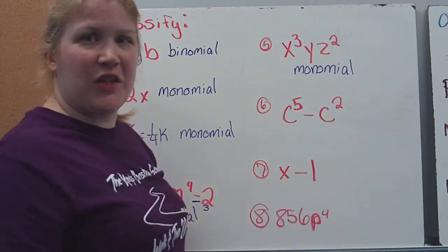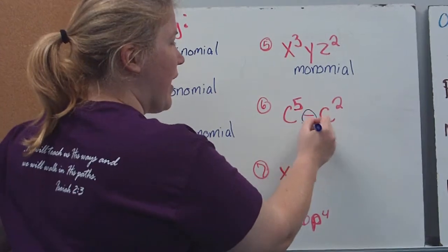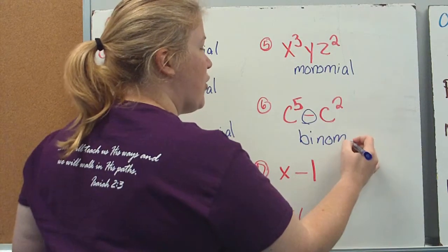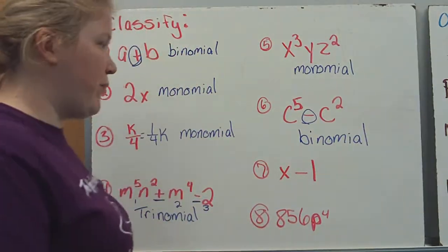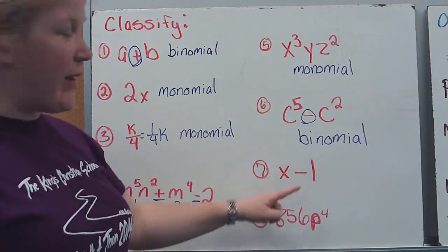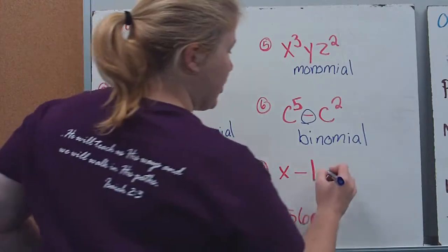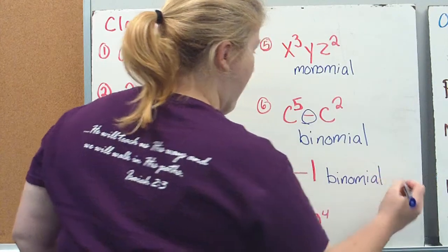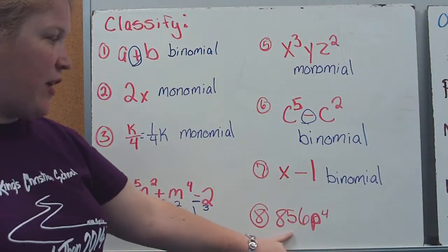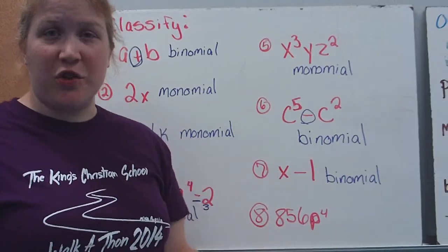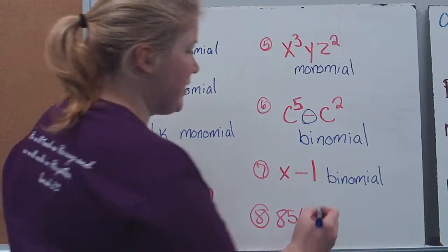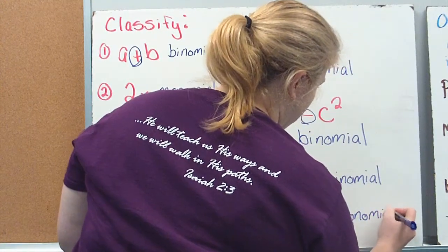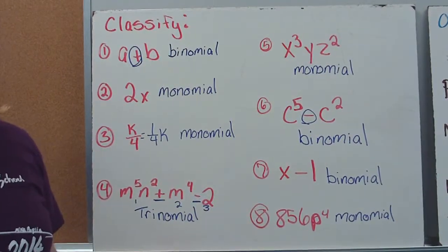Here I have c to the fifth minus c squared. I have a minus in the middle, so I have two separate terms — making this a binomial. x minus 1, same way: two terms separated by a subtraction sign, so this is a binomial. And 856p to the fourth — no addition or subtraction sign separating terms, so this is a monomial. We're just multiplying it all together.